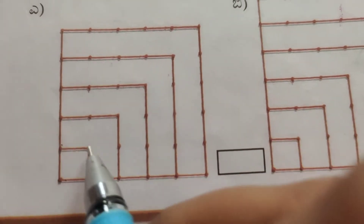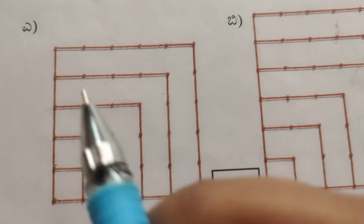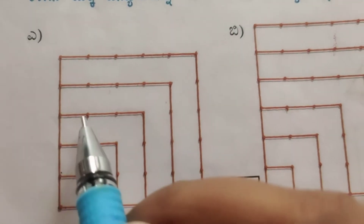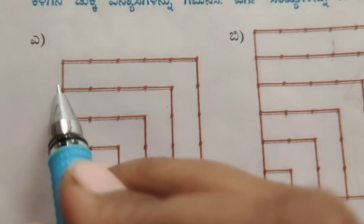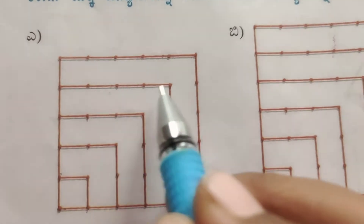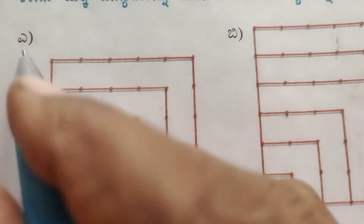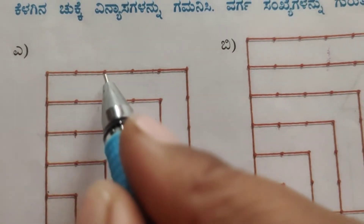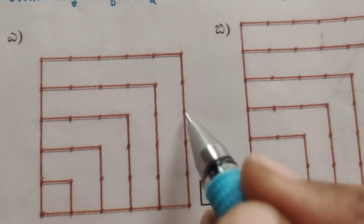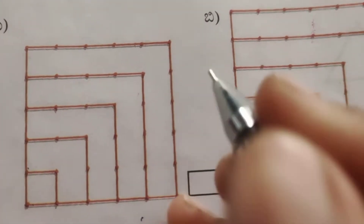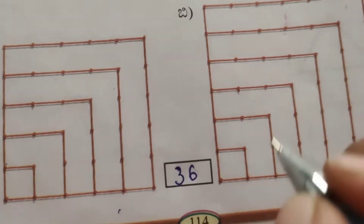Counting the first figure's dots: 1 through 36 — so write 36 in the box.